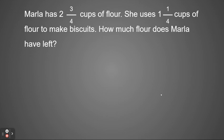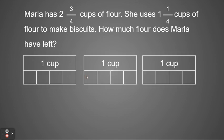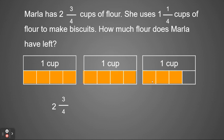We're going to start with our total, which is two and three fourths cups. My picture is going to be a cup broken into four parts because my denominator is four, and I have two full cups and a part of another cup, so I need three bar models. I'm going to fill in two and three fourths on my bar models: one, two, and three fourths.